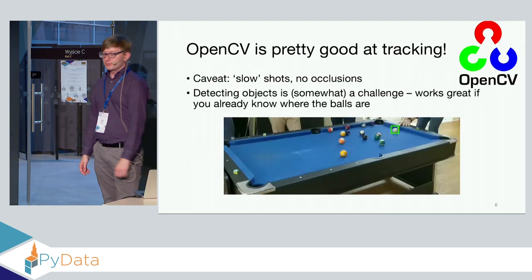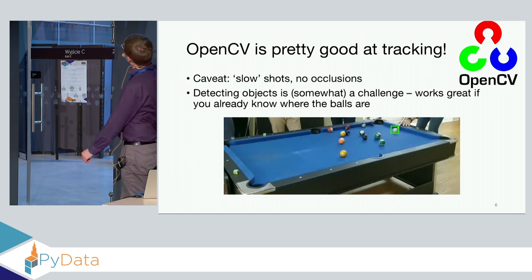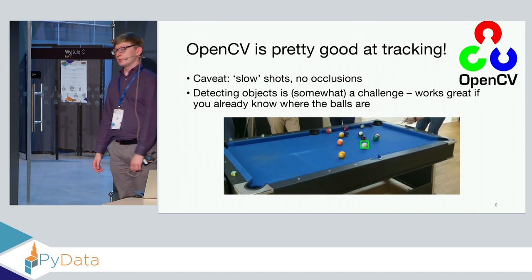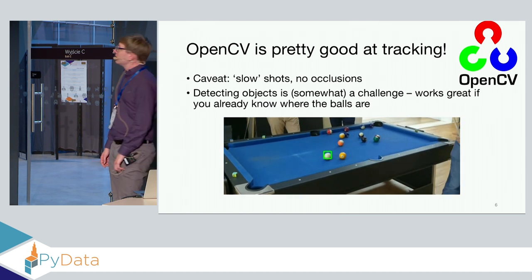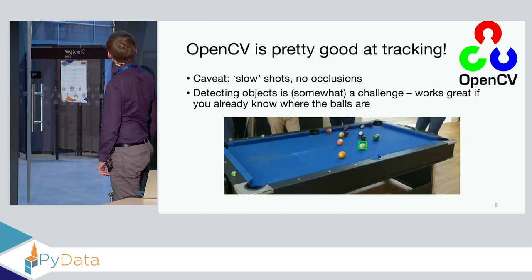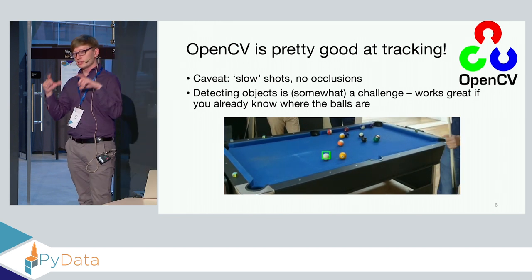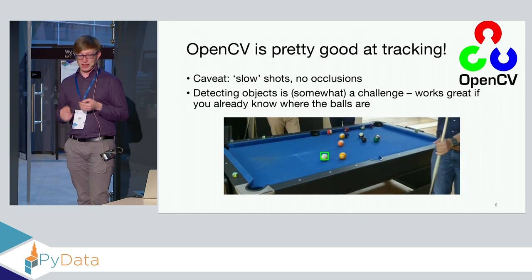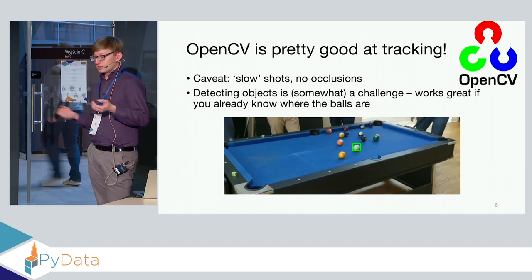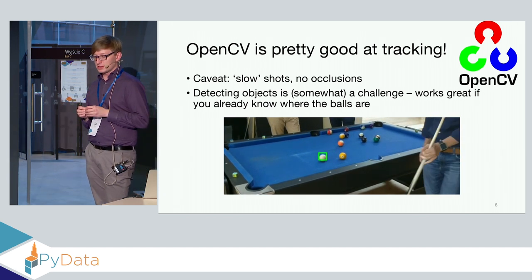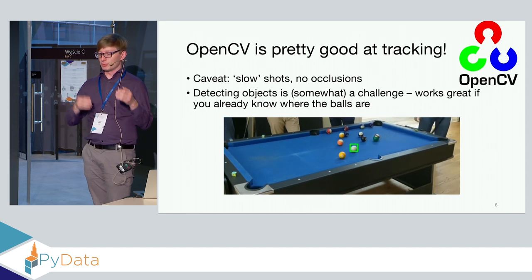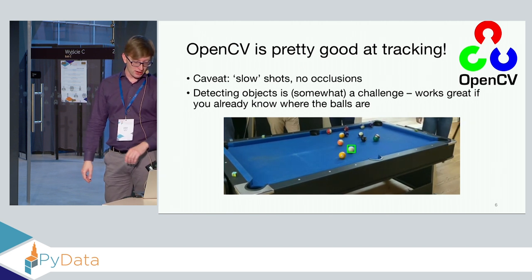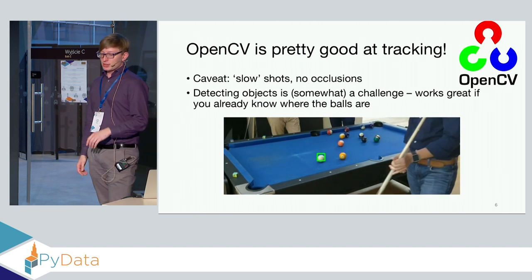OpenCV is actually pretty great at object tracking from a video if you know where the objects are to begin with. Here's an example of one shot where, if you have the region of interest and know where the balls already are, the accuracy is pretty good. It has some problems with one ball occluding the other, but overall it's pretty great.